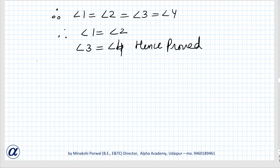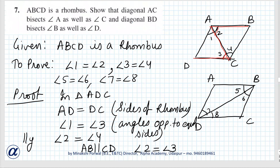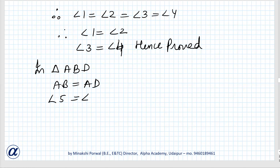Similarly, we can prove for diagonal BD. In triangle ABD, AB equals AD, therefore angle 5 equals angle 7. Similarly, angle 6 equals angle 8.